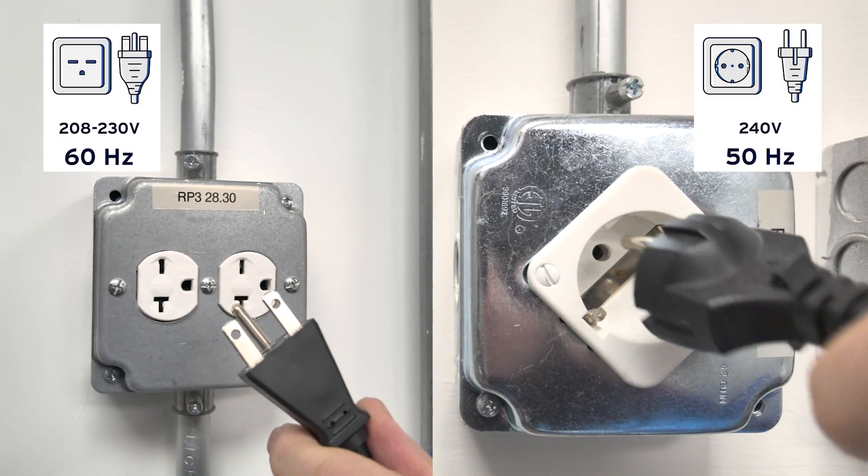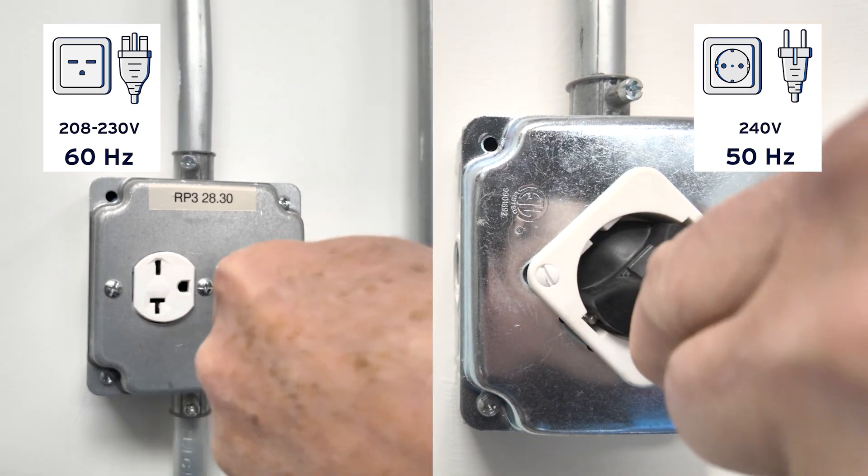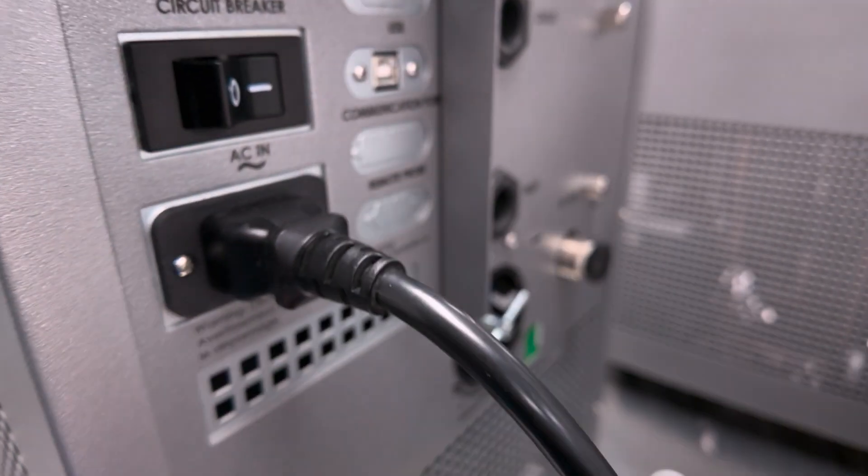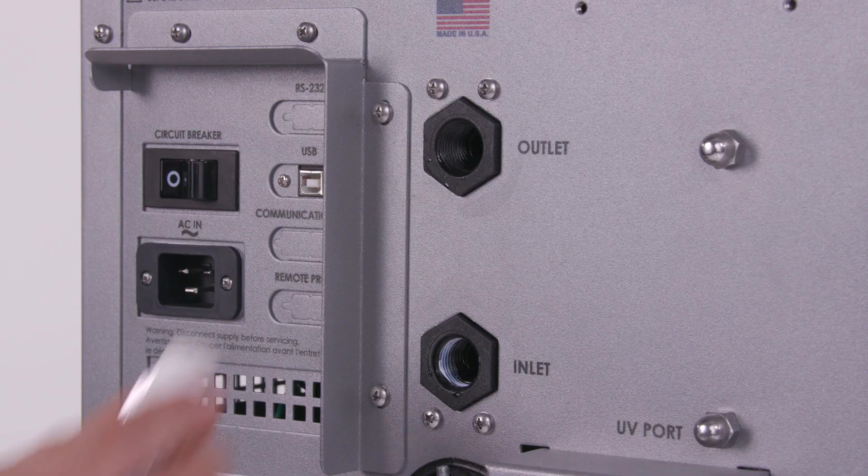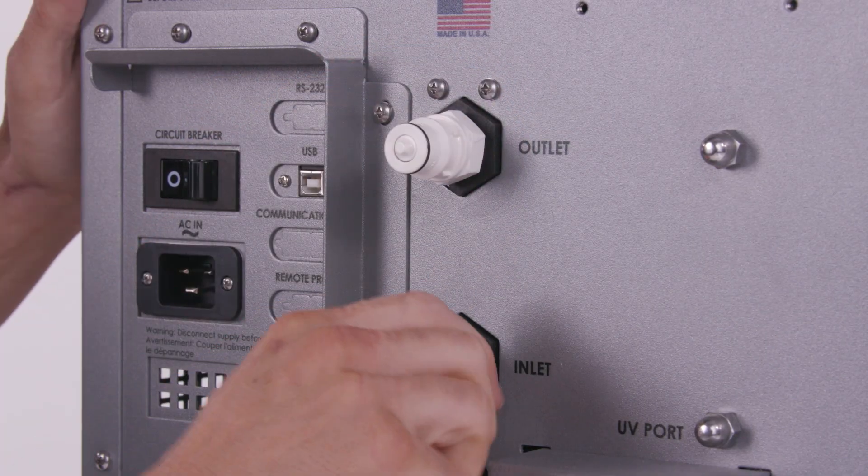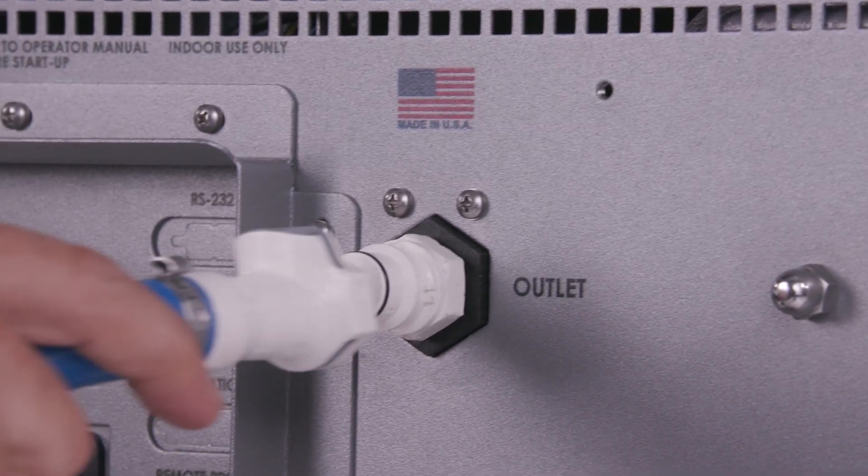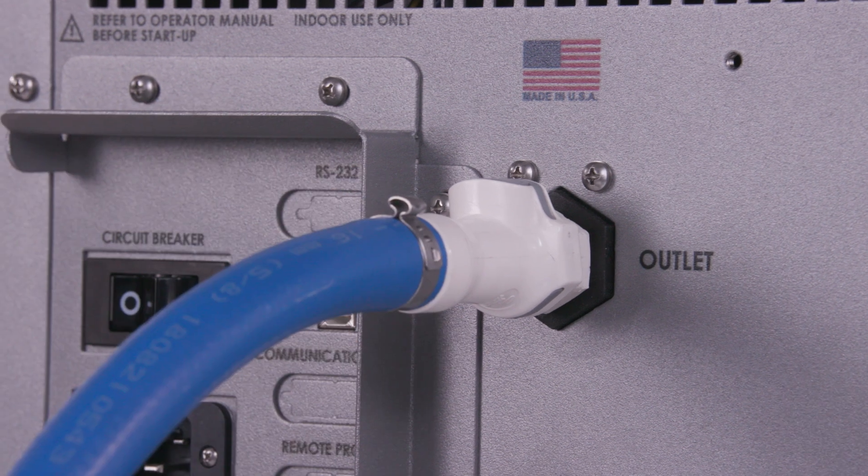Ensure that the power cord is fully inserted at both the outlet and the chiller power inlet. Connect the fittings at the rear being careful not to over tighten. Connect the tubing to the unit being cooled.